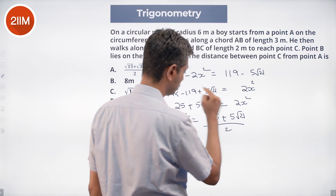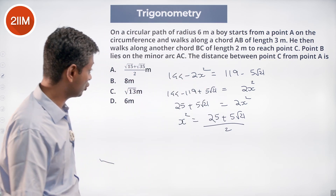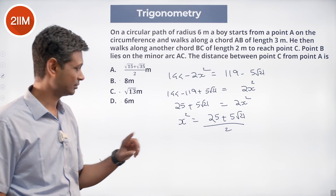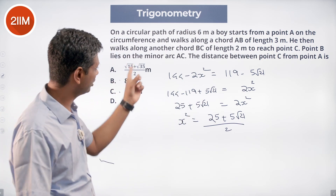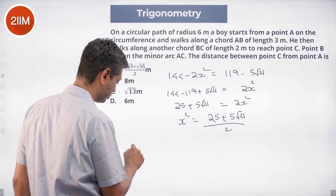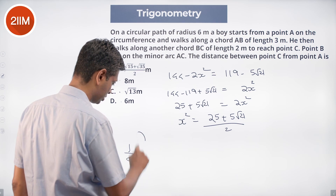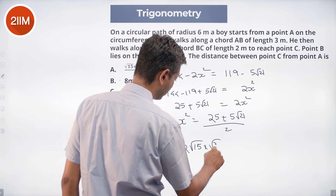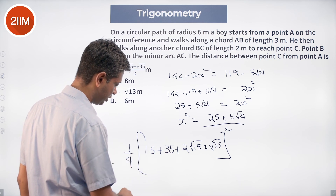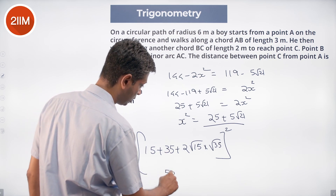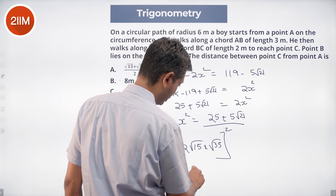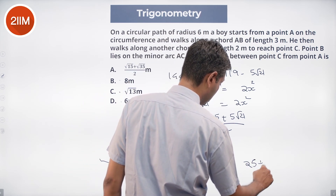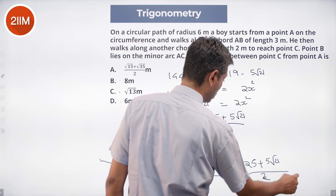So x² = (25 + 5√21)/2. My gut says the answer is (√15 + √35)/2. Let's verify: ((√15 + √35)/2)² = (1/4)(15 + 35 + 2√15·√35) = (1/4)(50 + 2×5×√21) = (1/4)(50 + 10√21) = 25/2 + 5√21/2 = (25 + 5√21)/2. That matches, so AC = (√15 + √35)/2.